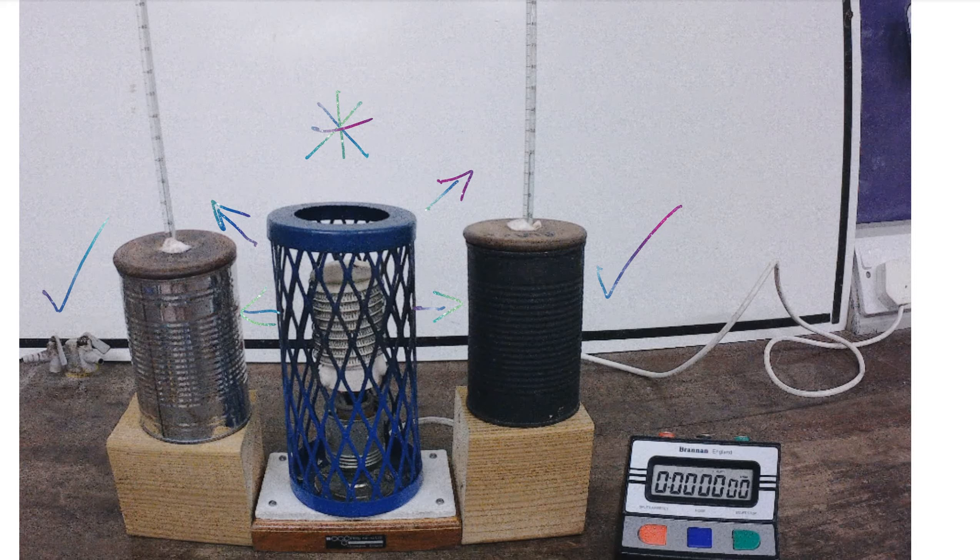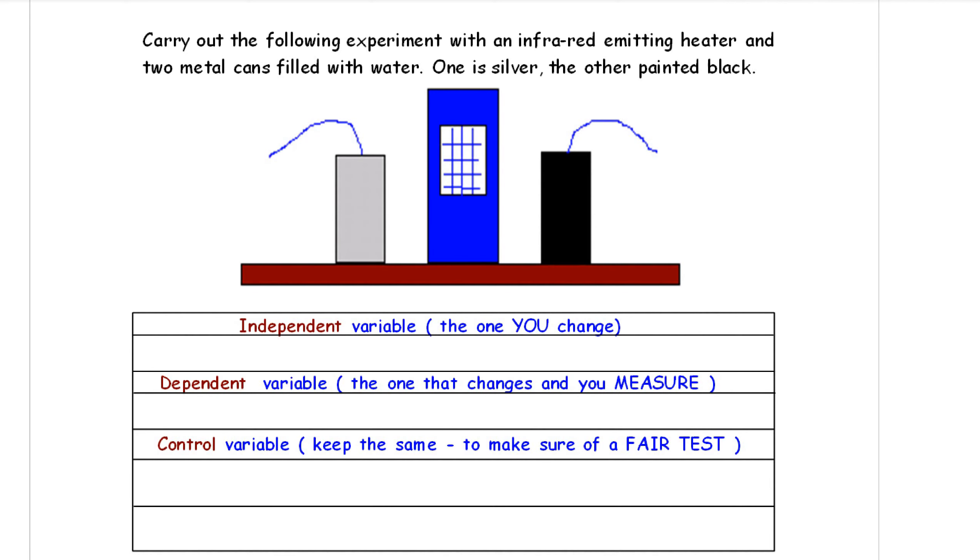It's nice and simple. Independent variable, the thing that you change, that's the color of the can. Dependent variable, you're going to measure the water temperature, don't forget the units in degrees C. And then control variables, what you're going to keep the same to make it a fair test. Well, surely you're going to have the same volume of water in centimeters cubed, surely it's going to be the same distance from the radiant heater in centimeters, surely the can is going to be the same size, surely the can is going to be made out the same material, surely you're going to have the same type of liquid in the can, and surely you're going to start with the same starting temperature in degrees C.